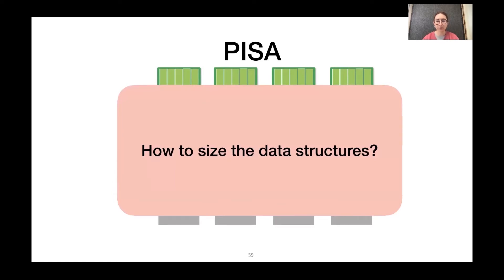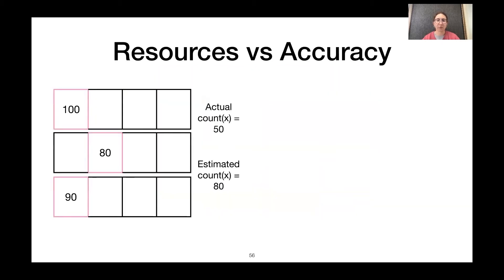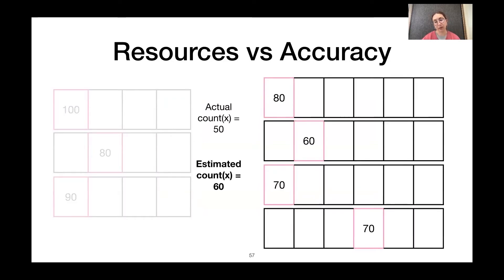But how do we actually know what the best size of these data structures is? So, it turns out that this is actually kind of a difficult question to answer because there's this trade-off between the resources and accuracy of the data structure. So, for our count sketch, in this example, let's say we have an actual count of 50 and this version of the sketch will give us an estimated count of 80. Now, let's say we make our sketch bigger, add more rows and more columns. This might give us a more accurate estimation. And this is because as we increase the size, we reduce the number of hash collisions. However, the more accurate sketch might not always be the best choice because it uses more resources. So, our goal with P4All is to be able to express all versions of the sketch with a single elastic data structure.